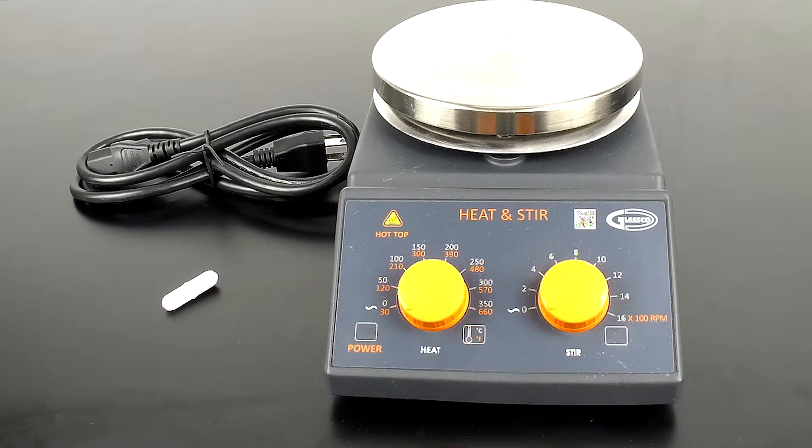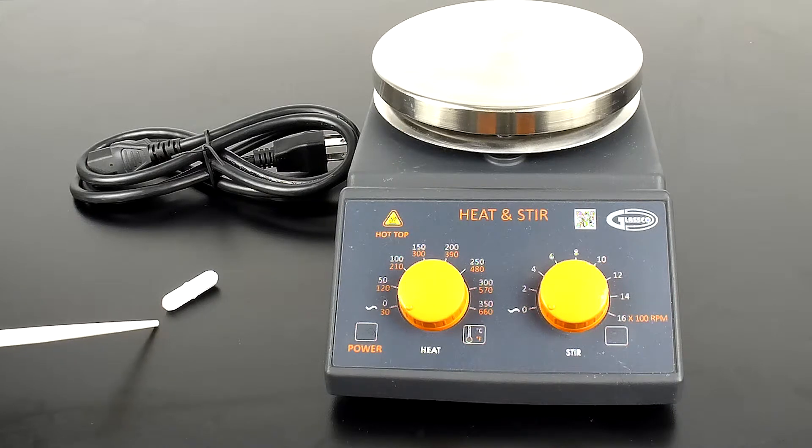The dual function hot plate stirrer is a multi-function lab apparatus with a variety of applications. The unit comes with a three and a half centimeter stir bar,